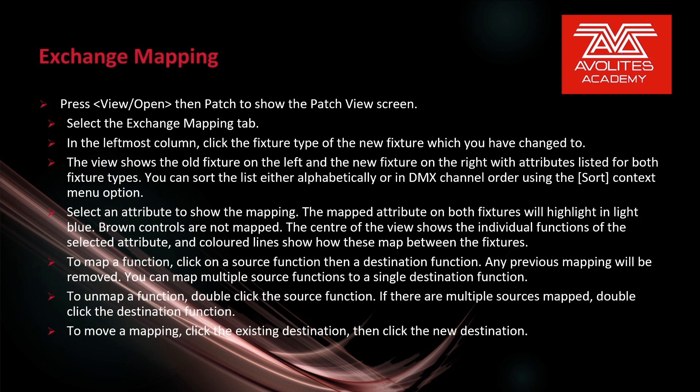Press View/Open in the patch to open the patch view screen. Select the Exchange Mapping tab. In the last/most column, click the fixture type of the new type of fixture which you have changed to. The view shows the old fixture on the left and the new fixture on the right, with the attributes listed for both fixture types. You can sort through the list either alphabetically or in DMX channel order using the Sort Context menu option.